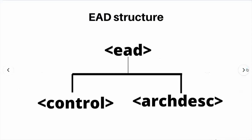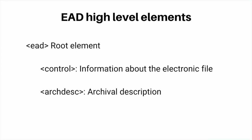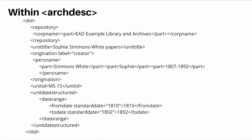A document encoded in EAD has two sections: Control and Archival Description. The Control section includes information about the EAD document itself, and the Archival Description section provides information about the materials you're describing and relationships between the materials and other entities, for example, the records creators. Within the Archival Description section, you have some basic building blocks. A Descriptive Identifier, or DID, includes elements that identify the materials, such as title, date, physical description, repository, language of the materials, and so on.